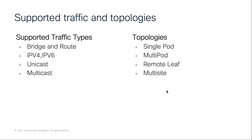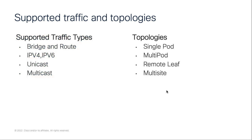F-Triage can help with tracing different traffic types, which includes bridged, routed, IPv4, IPv6, unicast, and multicast flows. It is also supported for different ACI topologies like single pod, multipod, remote leaf, and multi-site setup.